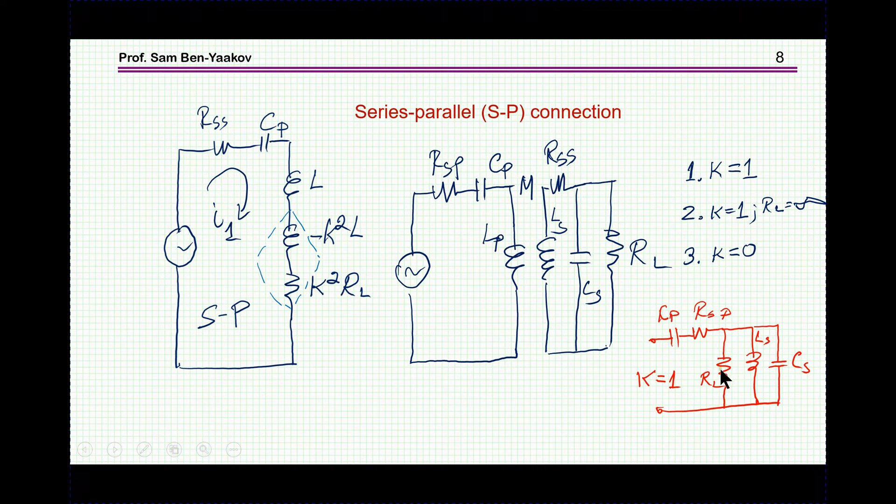So, if I look at this, then, obviously, because these two are in resonance, I have here, actually, a capacitor, resistor, plus another resistor. And this is for K equal to 1. This is minus L, which cancels out this L. K is 1. We have RL, exactly as we have it here. We have the resistor, capacitor, and RL. Resistor, capacitor, and RL.